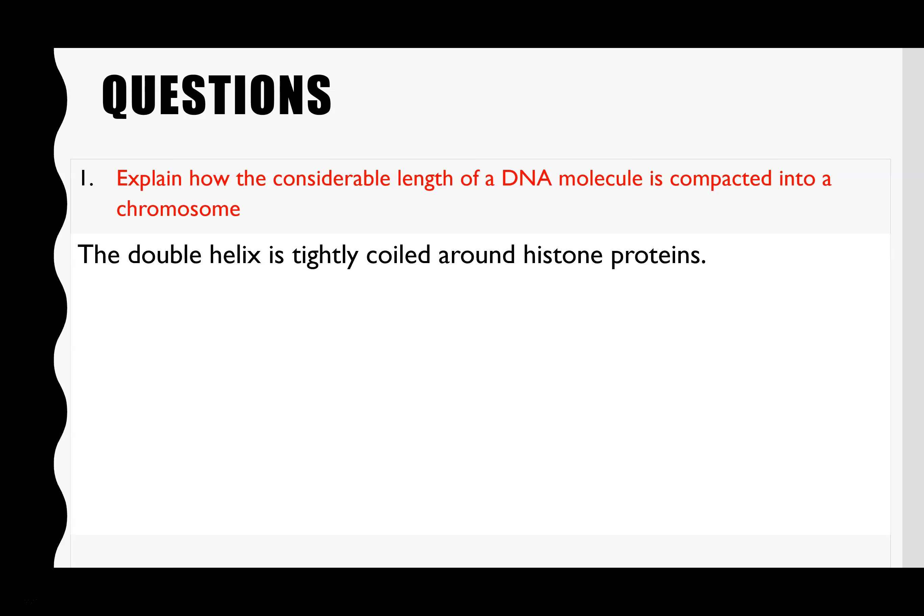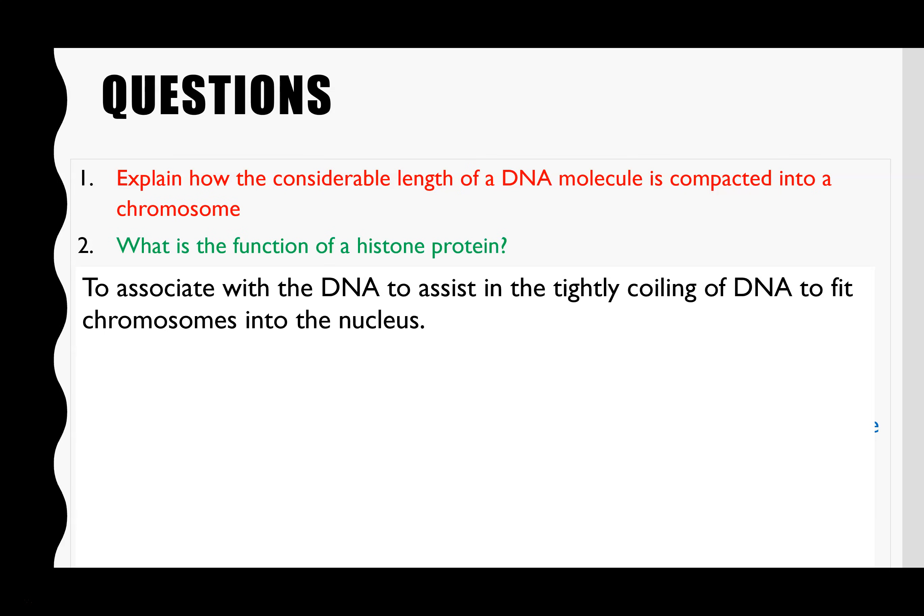Question one: explain how the considerable length of a DNA molecule is compacted into the chromosome. For eukaryotic cells, the double helix gets tightly coiled around histone proteins to make the nucleosome complex, and that is what forms the chromosome. Question two: what is the function of a histone protein? Those proteins associate with the DNA to assist in tightly coiling — the histone protein is there for the DNA to wrap around so it can tightly coil and fit into the nucleus as part of the chromosome.